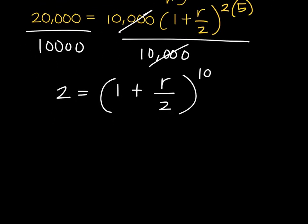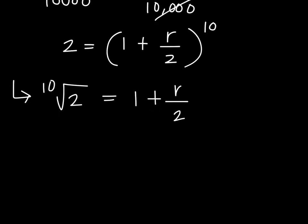To eliminate the exponent 10, you need to get the tenth root of 2. So tenth root of 2 equals 1 plus R over 2. Do not simplify this yet - wait until you find R.